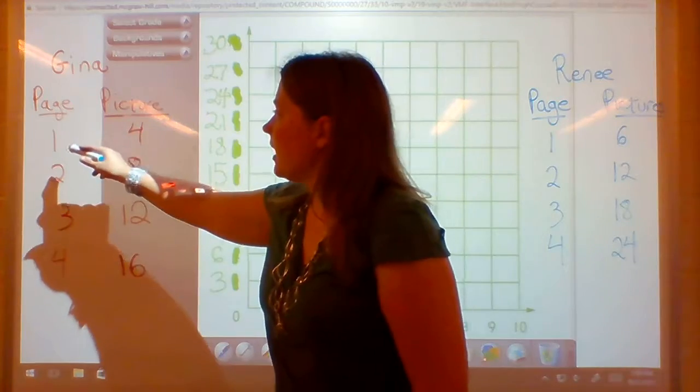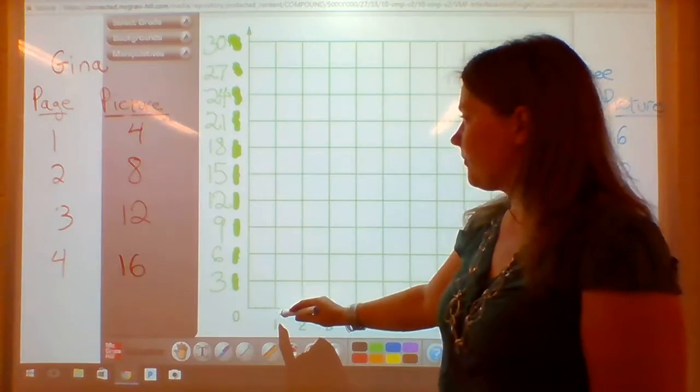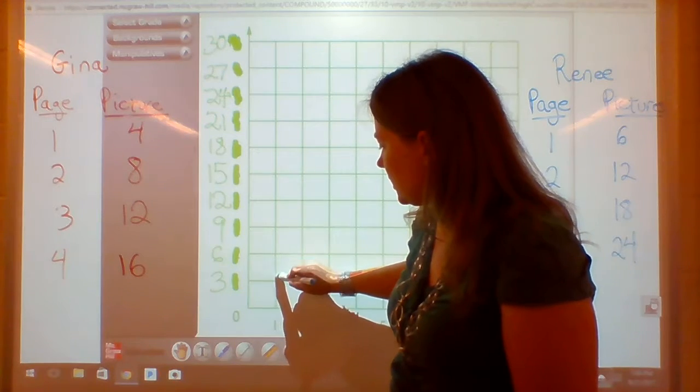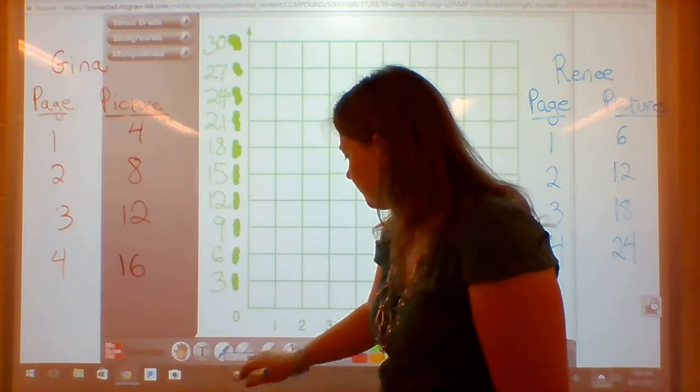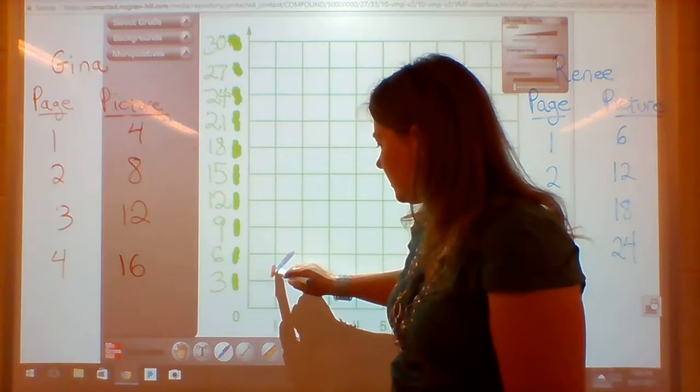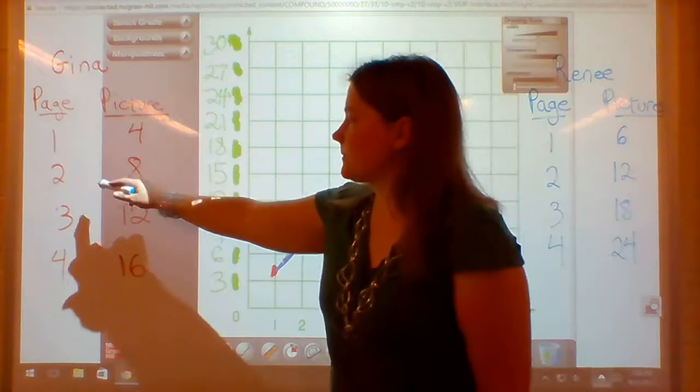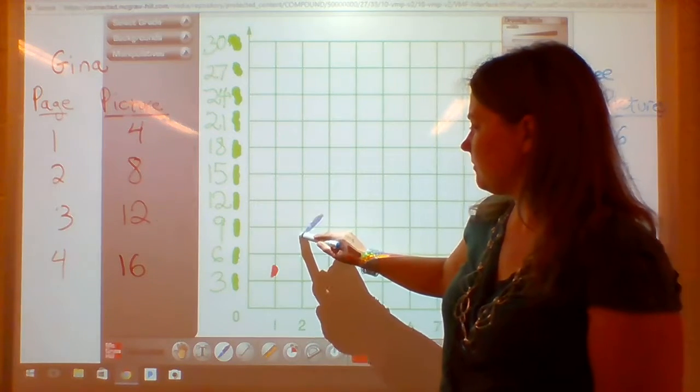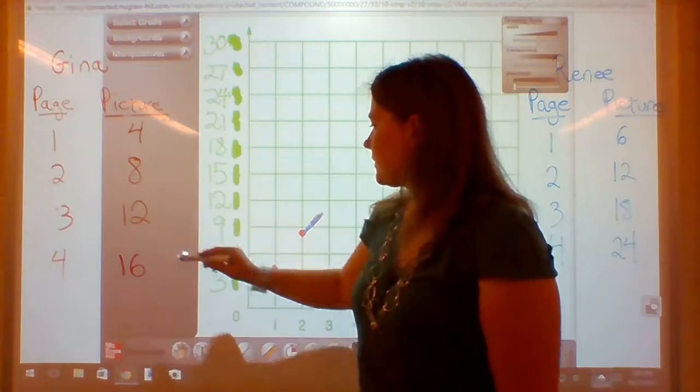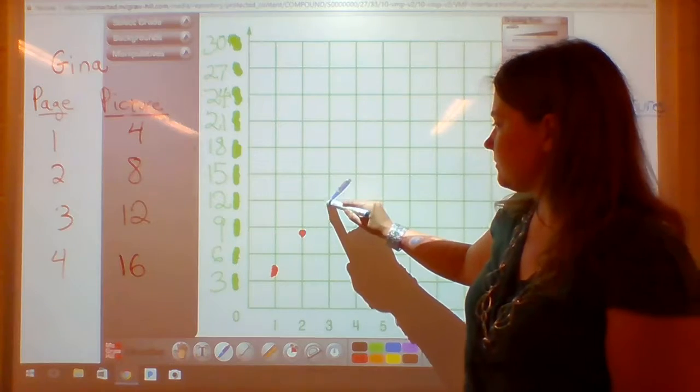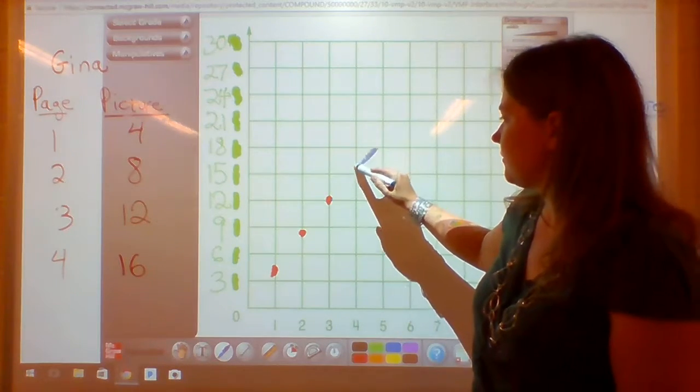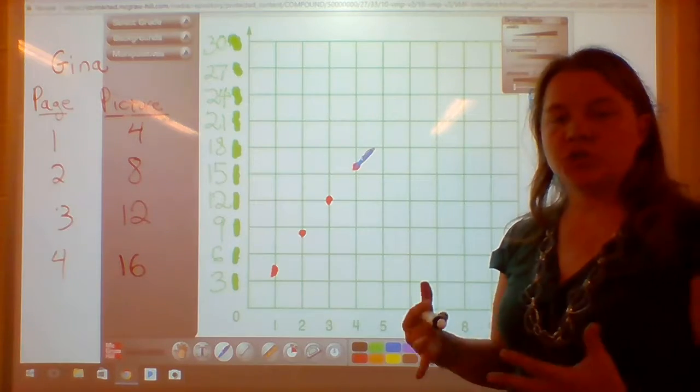So if we take Gina and we take her page 1 and her 4 pictures, we're going to go right there. Her next page, on 2, she'll have 8 total pictures, so we're going to go up to 8. On page 3 she'll have 12 pictures. And on page 4 she'll have 16 pictures. That's what Gina looks like.